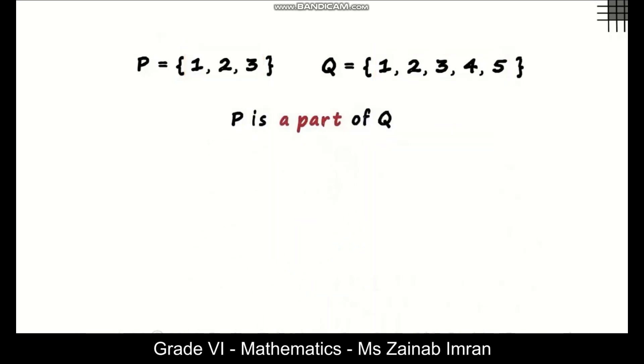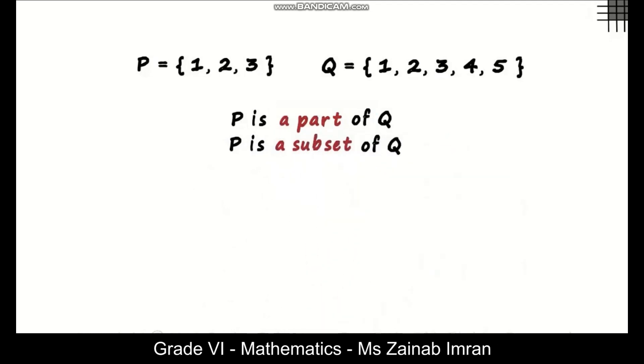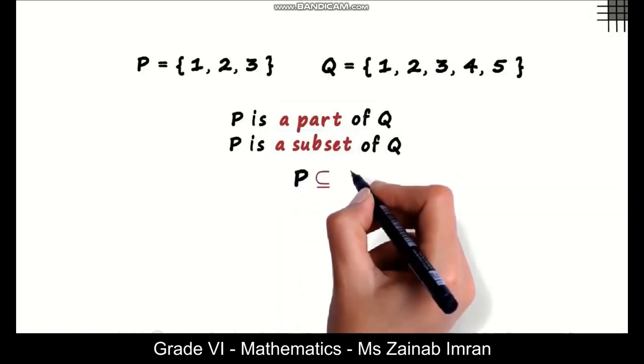And we learnt in the previous video that part of also means subset. So we can say that set P is a subset of set Q. Do we have a symbol to represent this? Yes, it's written like this. P is a subset of Q.